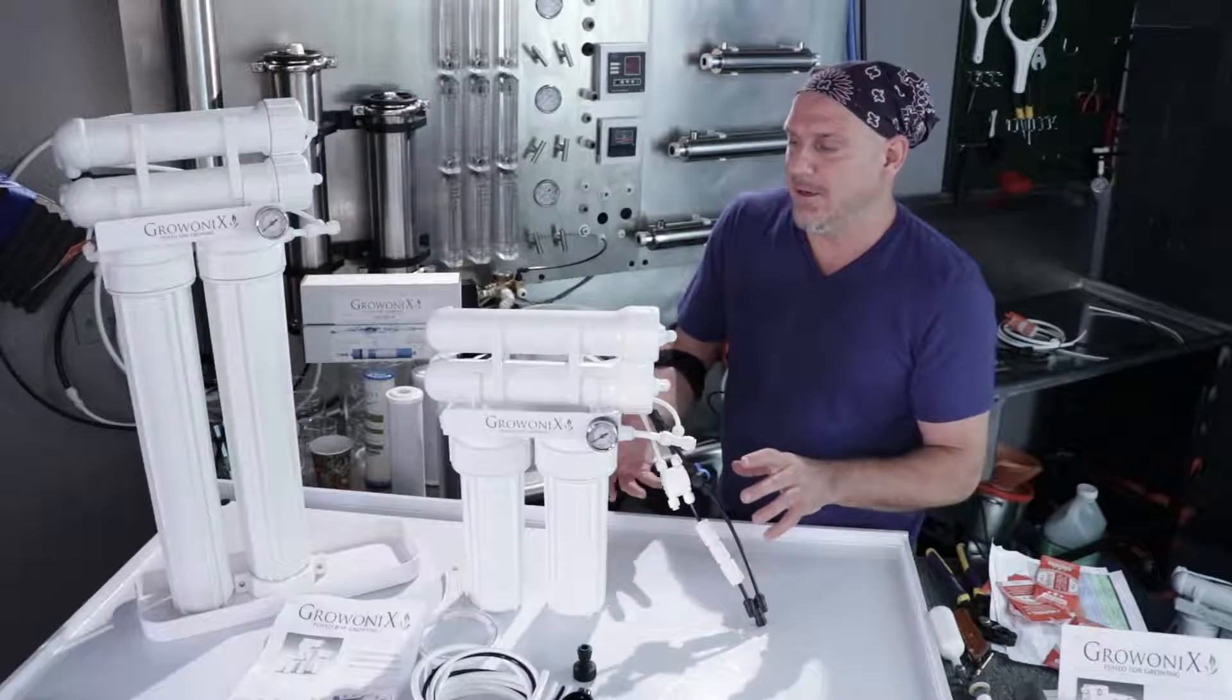Now we're going to hook up the permeate line, or the RO line, or the filtered water out line—all the same thing, different words. We're just going to insert it into the ASV, which is the automatic shutoff valve. You'll see the white tube coming from the membranes, passing through the valve this way, and we're going to insert the RO line right there.